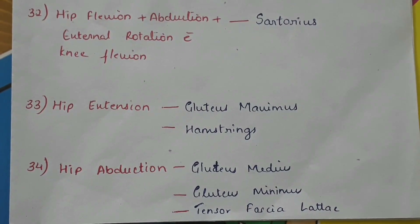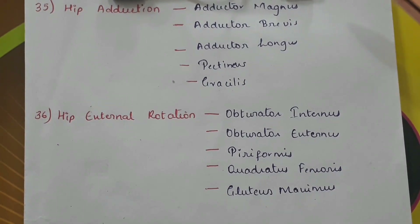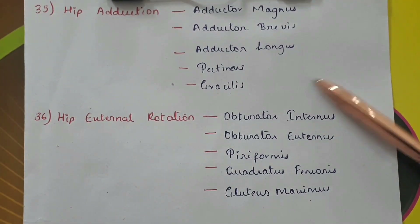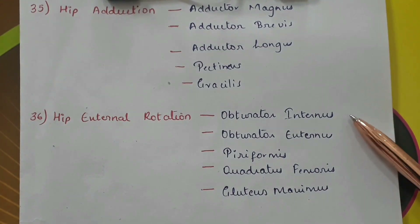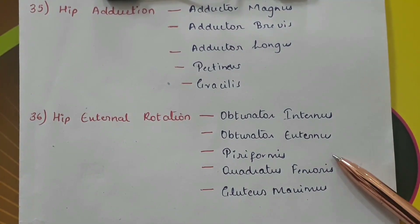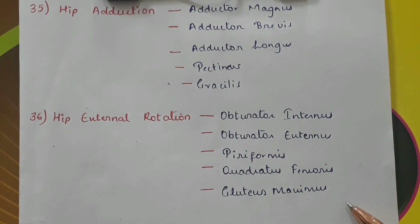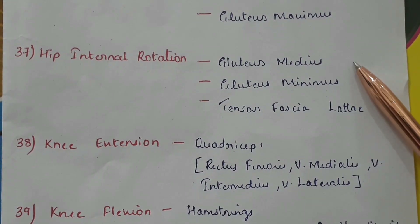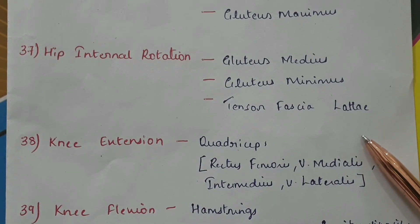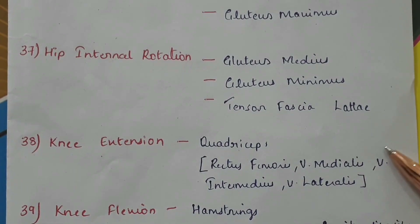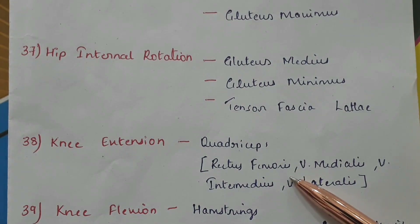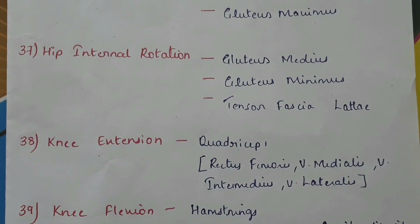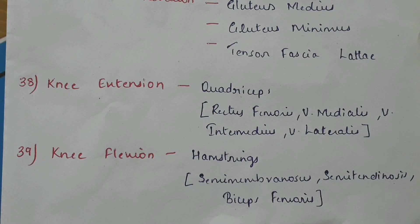Hip adduction by the adductor magnus, adductor brevis, adductor longus, pectineus, and the gracilis. Hip external rotation by the obturator internus, obturator externus, piriformis, quadratus femoris, and gluteus maximus. Hip internal rotation by gluteus medius, gluteus minimus, and tensor fasciae latae. Knee extension by the quadriceps muscles, which includes rectus femoris, vastus medialis, vastus intermedius, and vastus lateralis.